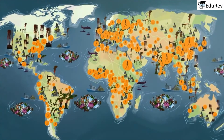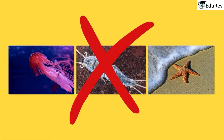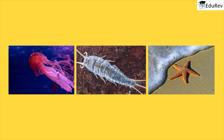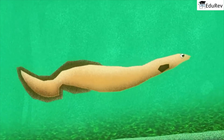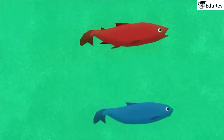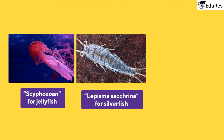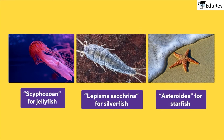Here is another example: jellyfish, silverfish, and starfish are not true fishes, but we still refer to them as fish, which is confusing. To escape this confusion, scientific names are made representing a particular organism in every part of the world — like Scyphozoa for jellyfish, Lepisma saccharina for silverfish, and Asteroidea for starfish. According to their scientific names, they now represent different organisms, which is accepted in every part of the world.